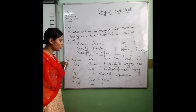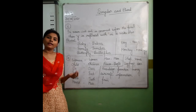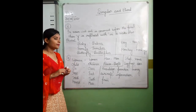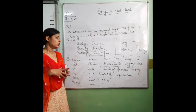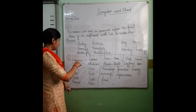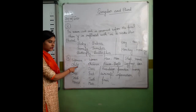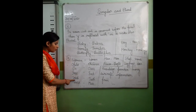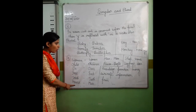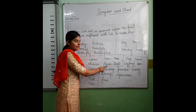Students, come to rule number four. Kuch nouns aisi hoti hain jinko plural form karne ke liye hume koi bhi rule follow nahi karna — these are irregular plurals. Woman → women, child → children, ox → oxen, foot → feet, tooth → teeth, mouse → mice, man → men, person → people.